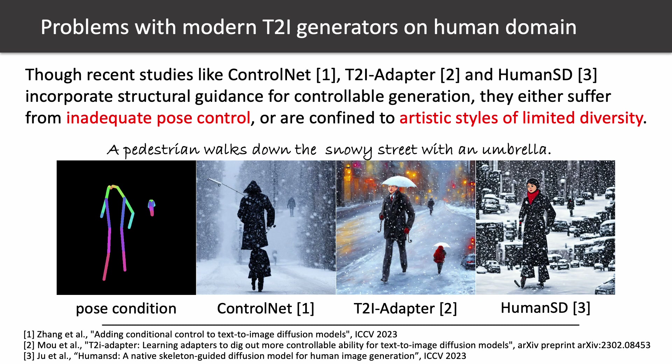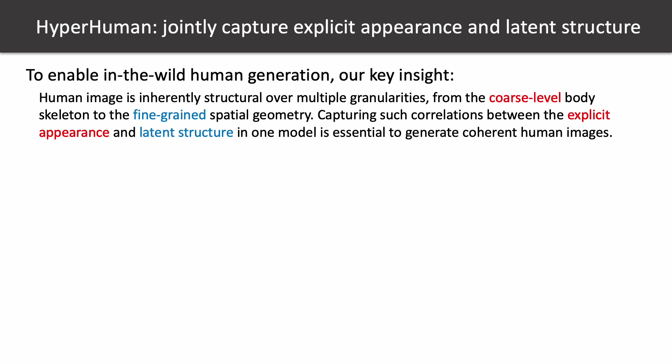Though recent studies like ControlNet, T2Adapter, and HumanSD incorporate structural guidance for controllable generation, they either suffer from inadequate post-control or are confined to artistic styles of limited diversity. To enable in-the-wild human generation, our key insight is that a human image is inherently structural over multiple granularities, from the coarse-level body skeleton to the fine-grained spatial geometry.